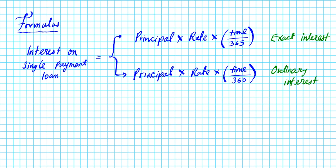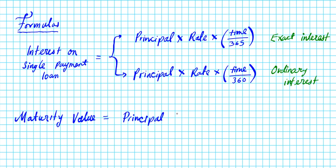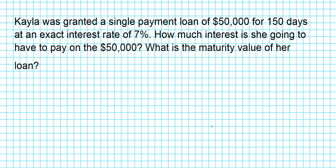Now we have the formula for interest. The maturity value of a single payment loan is basically how much you have to pay back when the loan is due. Unlike an installment loan, a single payment loan requires you to pay all the interest and the principal at the same time. The maturity value equals the principal plus the interest owed, which could be exact or ordinary as specified by the problem.